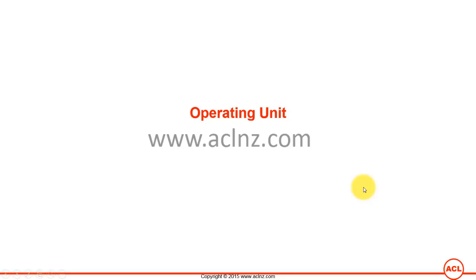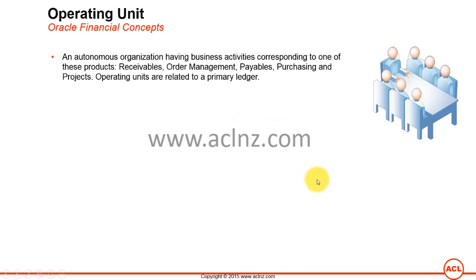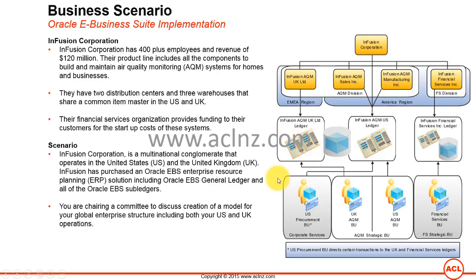So at this time you are in a pretty much better position to understand what's meant by an operating unit. The bookish definition is that an operating unit is an autonomous organization having business activities corresponding to one or more products such as receivables, order management, payables, purchasing, and projects. Operating units are related to a primary ledger.